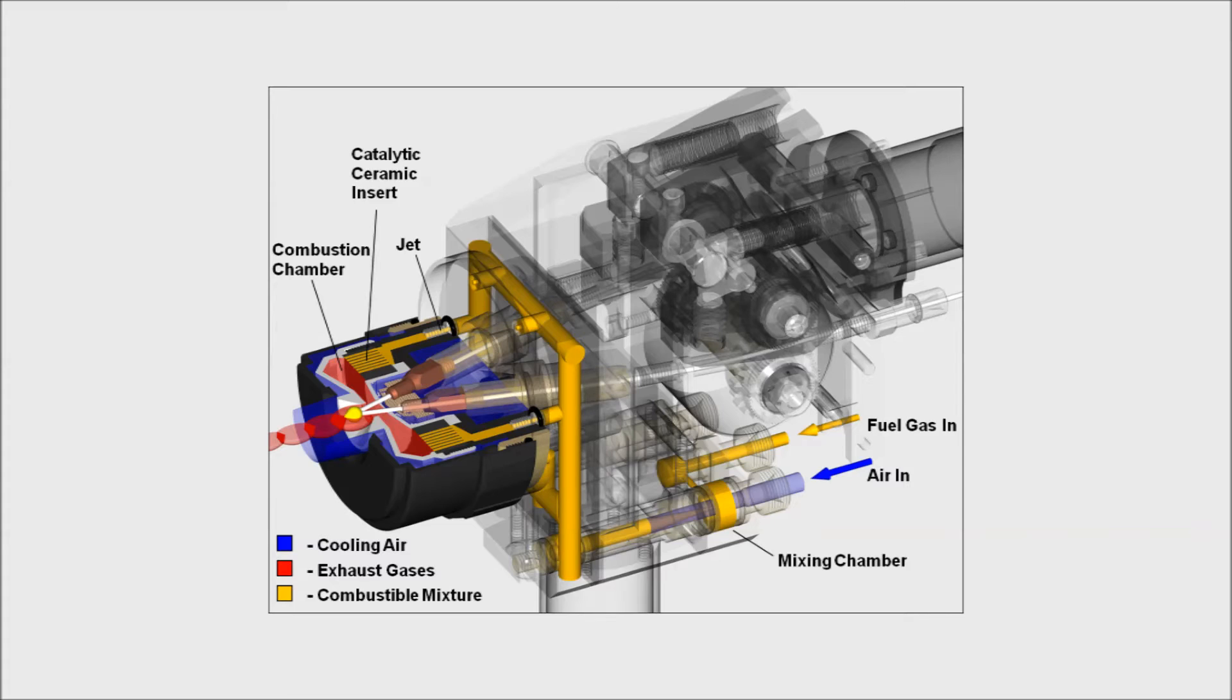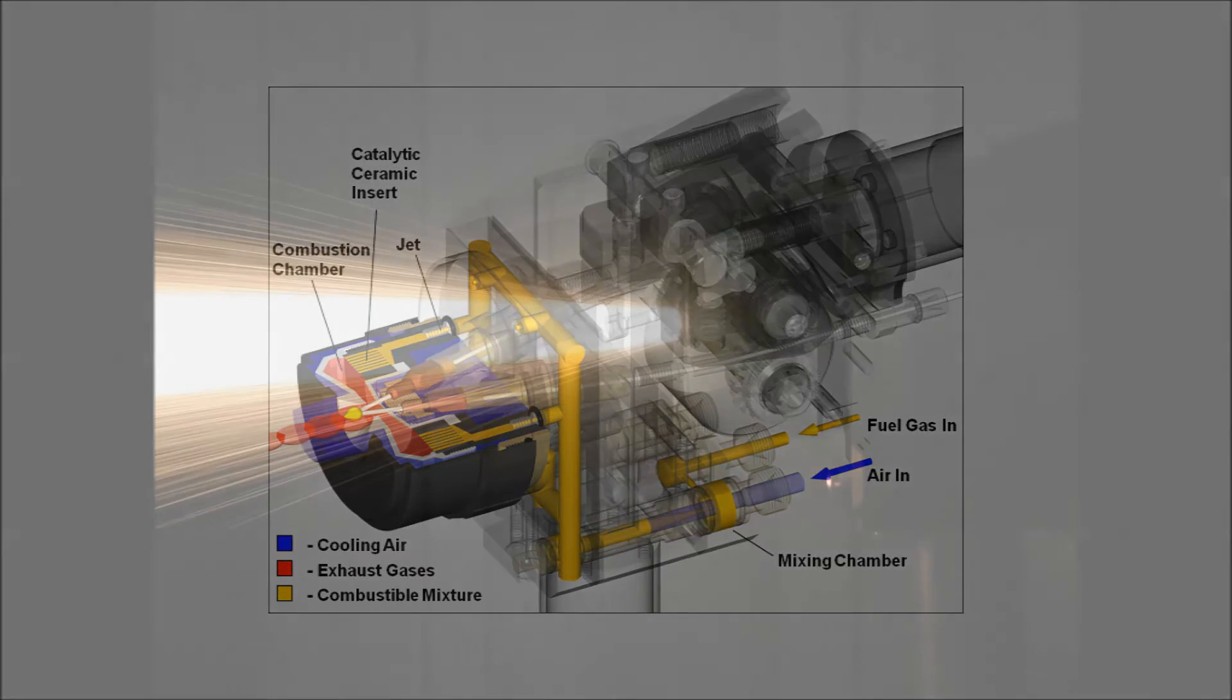The resultant high-velocity jet atomizes molten material, accelerates the particles, and propels them toward the substrate, where they form a coating. The HVAF jet produces a reducing environment that envelops the arc zone and protects the liquid metal from oxidation.